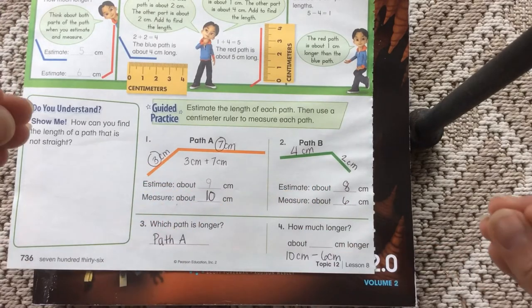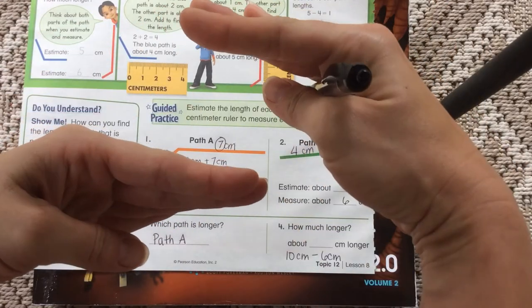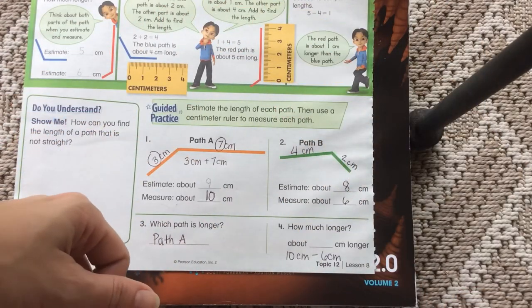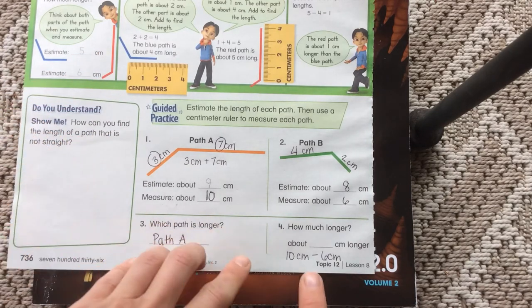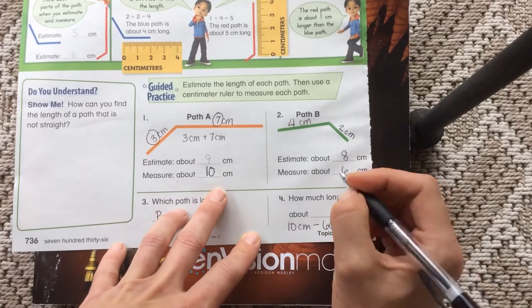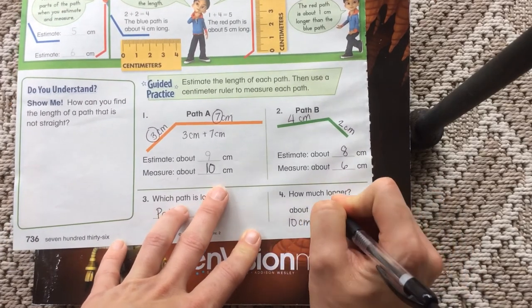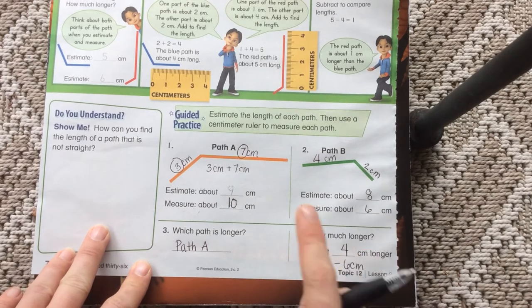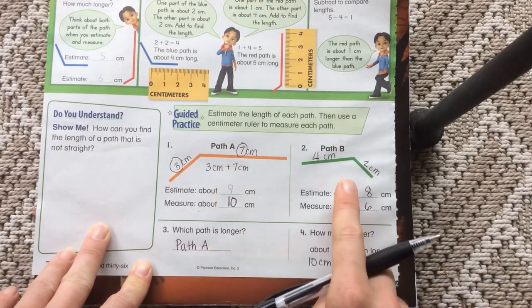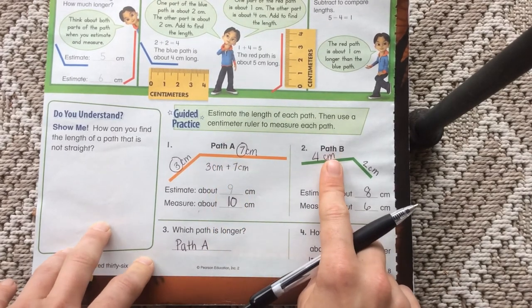If I could straighten these paths, and I could line them up on top of each other, and then I could measure, then that would be really easy. But since I can't do that, I'm going to just subtract. And that's going to get me the same answer. So 10 minus 6 is 4. So path B—oops, actually—path A is 4 centimeters longer than path B.